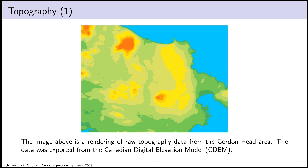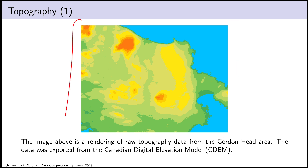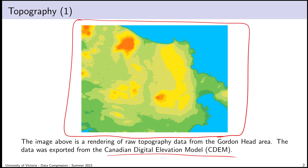The data we're going to talk about in this lecture is topography data, or elevation data — I'll alternate between these two terms. I used a GIS program to generate a visualization of a small swatch of topography data from the Canadian Digital Elevation Model, which I'll pronounce CDEM during this lecture. The CDEM is a publicly available source of data where you can retrieve information about the elevation of land in Canada, provided as a 2D array of values.